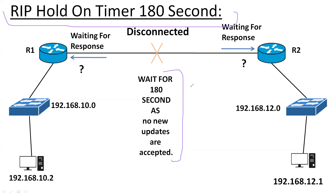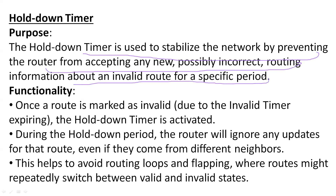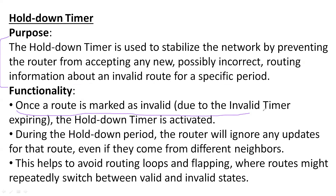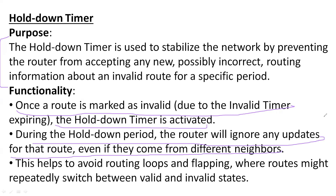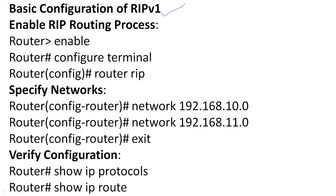The hold-on timer is 180 seconds. It prevents any new information from neighbors from being received or acted upon. The hold-on timer is used to stabilize the network by preventing the router from accepting new, possibly incorrect routing information from an invalid route. Once a route is marked invalid, the hold-on timer activates and the router will ignore updates from that route coming from different neighbors until the timer expires.